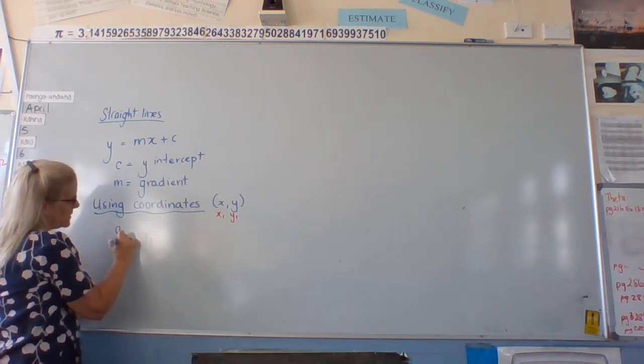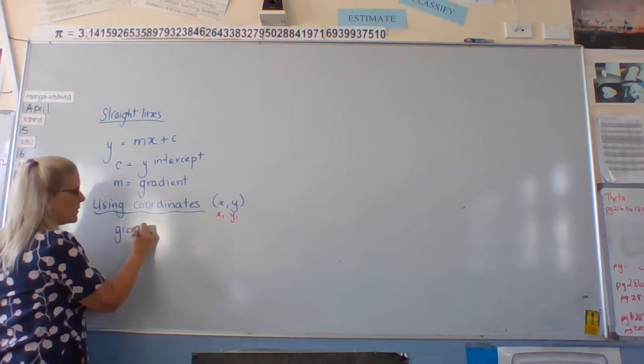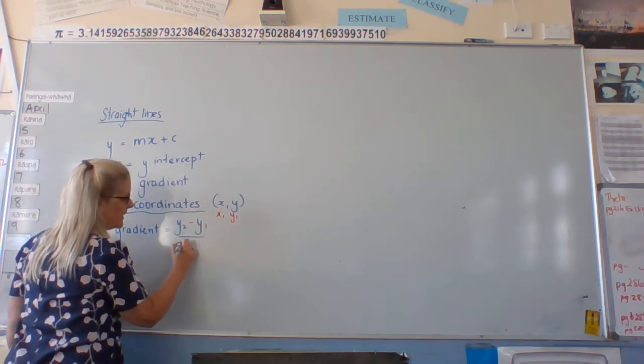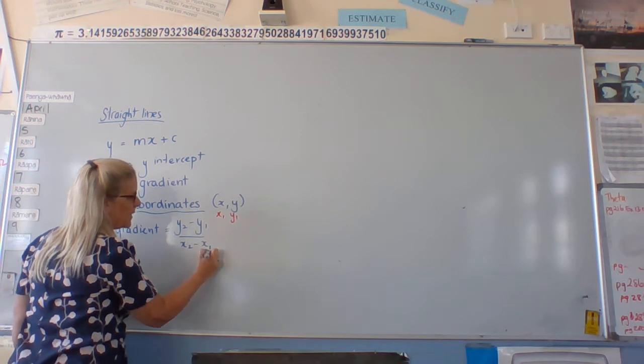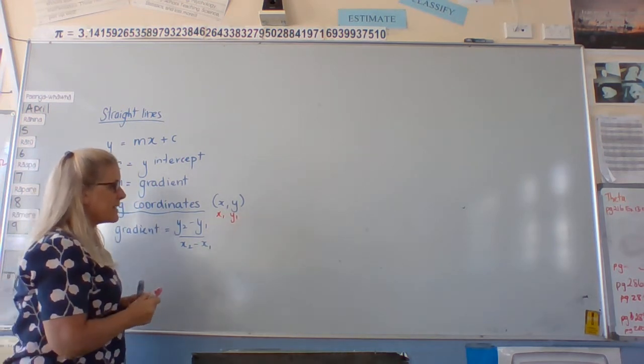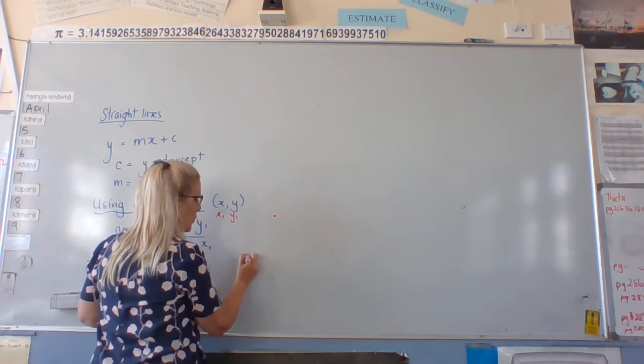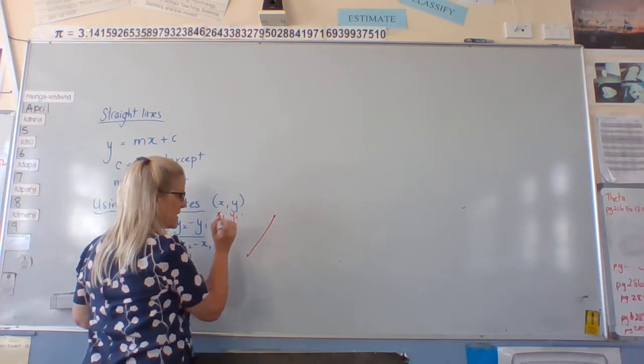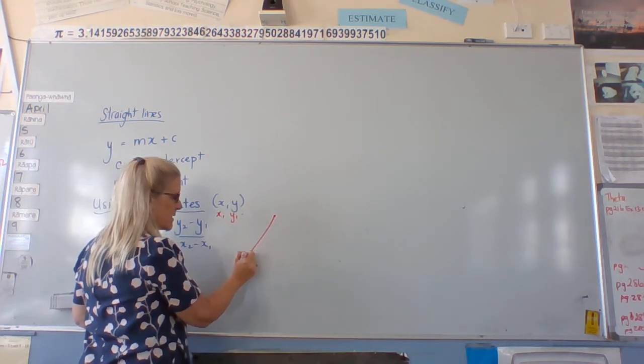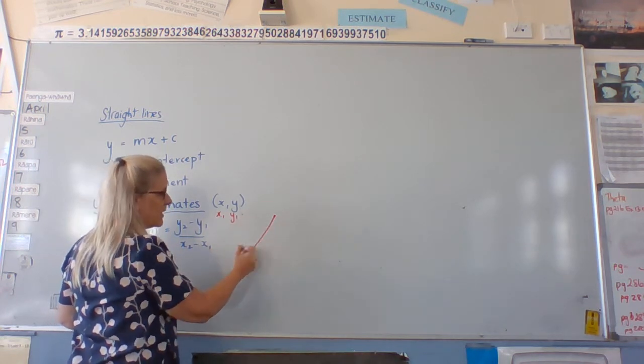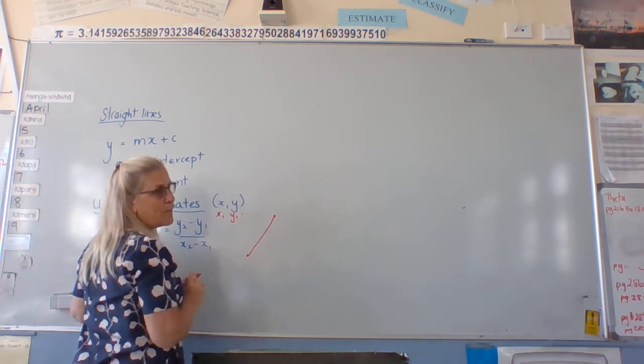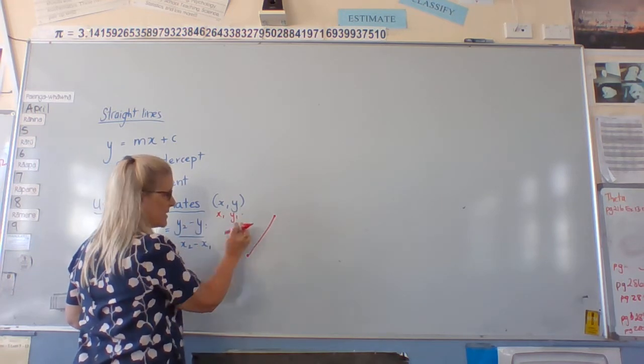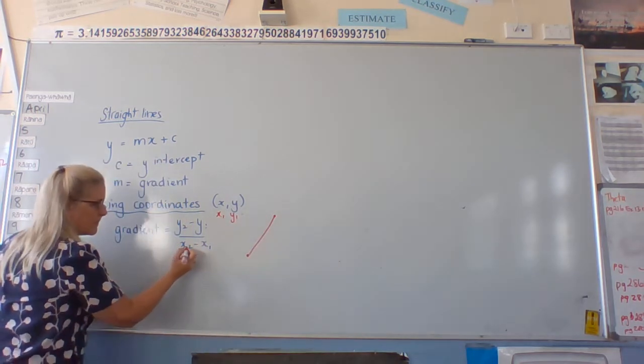To get the gradient using these, we use the formula y2 minus y1 over x2 minus x1. So what we're basically saying is if we've got two points, we're saying this distance minus this distance, and this distance minus this distance, so that we're actually putting that fraction over each other. So the distance up and the distance across.